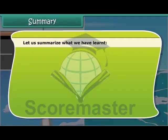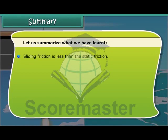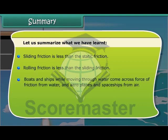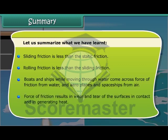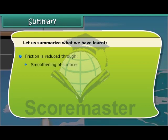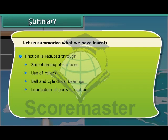Let us summarize what we have learnt: Sliding friction is less than static friction. Rolling friction is less than sliding friction. Boats and ships moving through water encounter friction from water, while aeroplanes and spaceships encounter friction from air. Force of friction results in wear and tear of surfaces in contact and in generating heat. Friction is reduced through smoothening of surfaces, use of rollers, ball and cylindrical bearings, lubrication of parts in motion, and streamlined shape of vehicles.